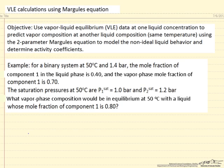In this example I'm going to show how we can use vapor-liquid equilibrium data for one liquid concentration to predict the vapor composition at a different liquid composition and the same temperature by modeling the non-ideal behavior of the liquid using the two-parameter Margules equation, and use that equation to determine the activity coefficients at the new conditions.